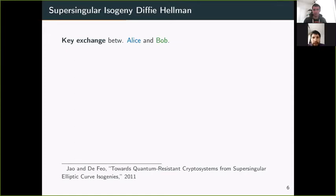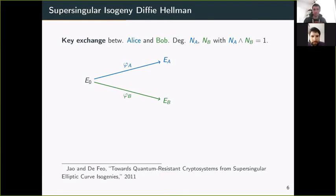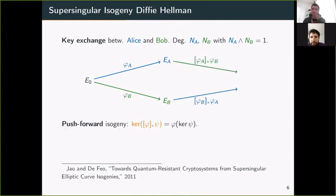Let me briefly recall SIDH, supersingular isogeny Diffie-Hellman, a key exchange between Alice and Bob. We have as parameters two integers Na and Nb which are coprime and smooth. Alice chooses a secret isogeny φA of degree Na from E₀ to EA. Bob chooses a secret isogeny φB of degree Nb from E₀ to EB.